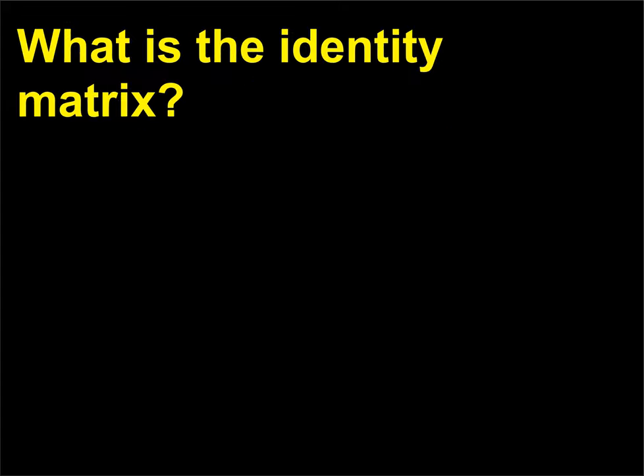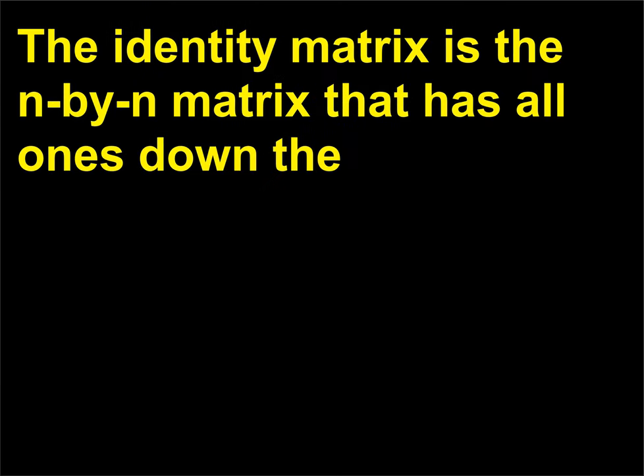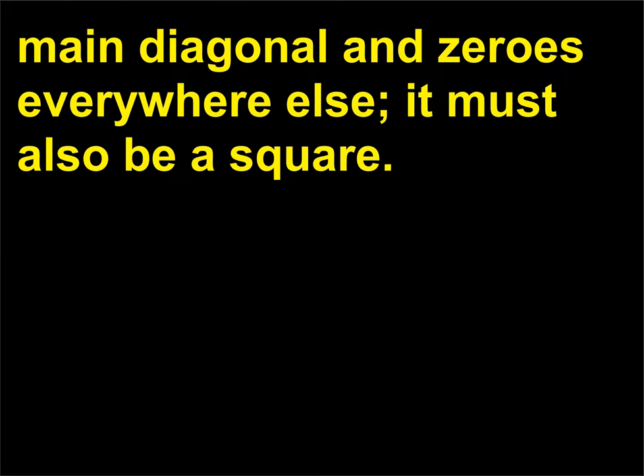What is the identity matrix? The identity matrix is the N×N matrix that has all ones down the main diagonal and zeros everywhere else; it must also be a square.